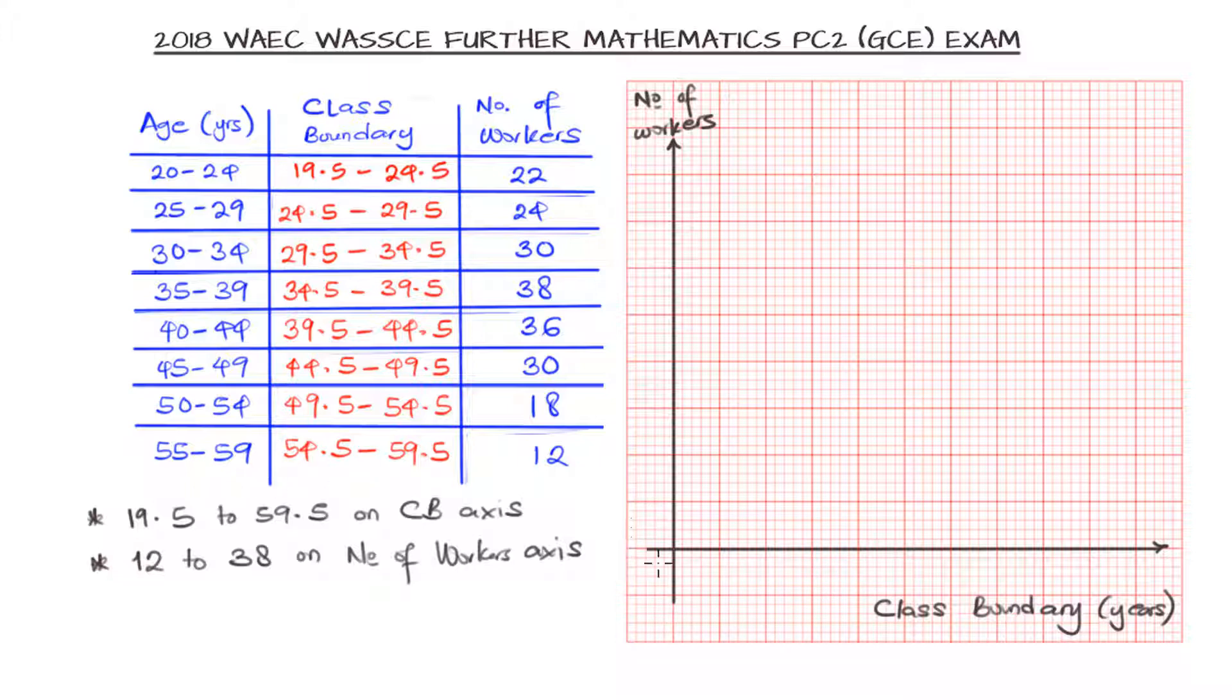And our class boundary we have defined already from our table, and the class boundary is in years. So how best can we actually put in this data starting from 19.5 to 59.5 on the class boundary. And then we notice that if we say we are not starting from zero, we notch our graph as shown. Then we put in the first entry, that is 19.5. Then if we just increase each of the step of the graph, the ticker lines, if we just take it as the entries that we are going to be using: 19.5, 24.5, 29.5, 34.5, 44.5, 49.5, 54.5, 59.5.